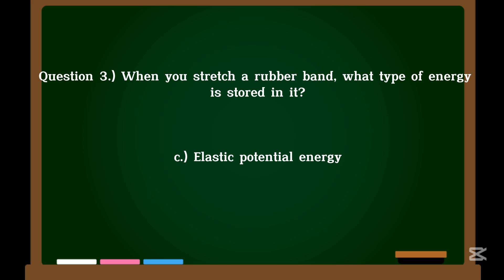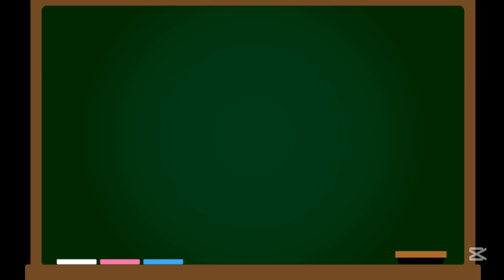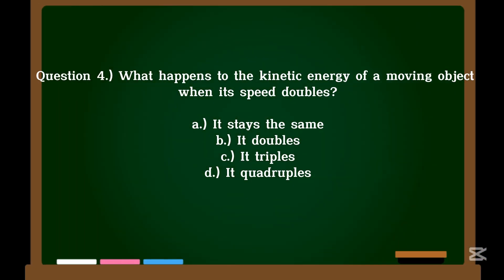Question 4. What happens to the kinetic energy of a moving object when its speed doubles? A. It stays the same. B. It doubles. C. It triples. D. It quadruples.